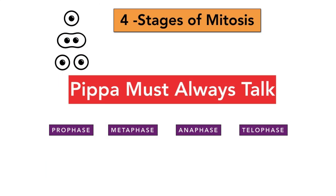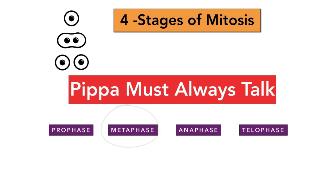This leads on to the four stages of mitosis. To remember each of the four stages, 'PIPA must always talk': there's Prophase, Metaphase, Anaphase, and Telophase.